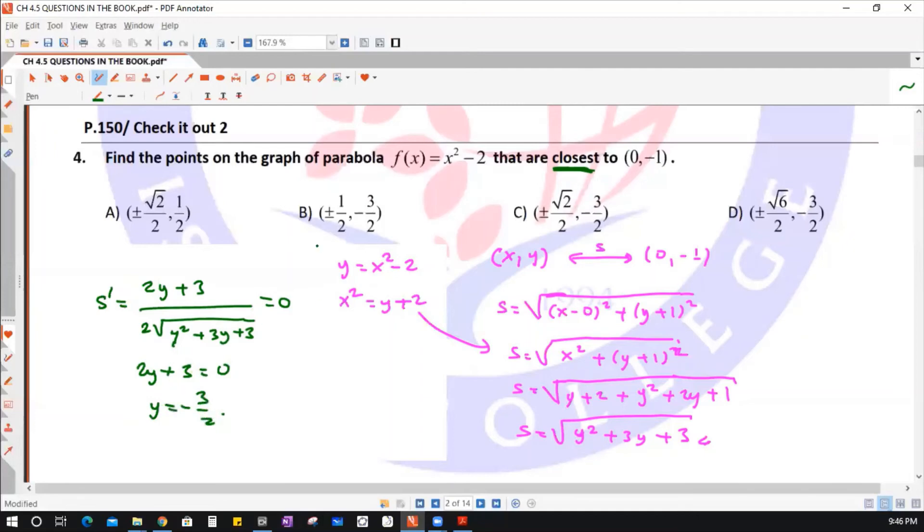I am deleting A. Answer must be B, C, or D because they have the same y value. To find the x value, use this relation: x² = y + 2 = -3/2 + 2. And x² equals 2 times 2 is 4, 4 minus 3 is 1, 1 over 2. And x equals plus minus square root of 1/2. And this is ±1/√2 or ±√2/2.